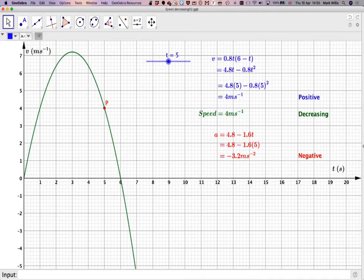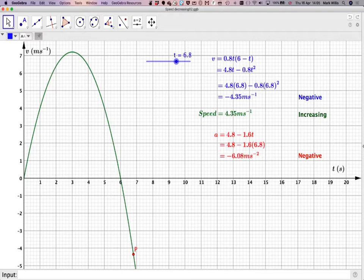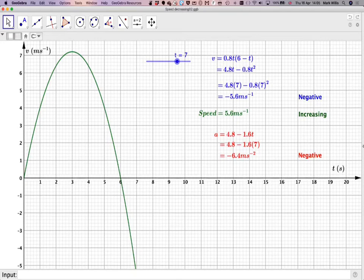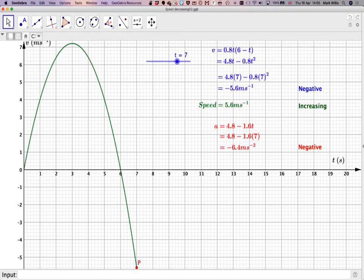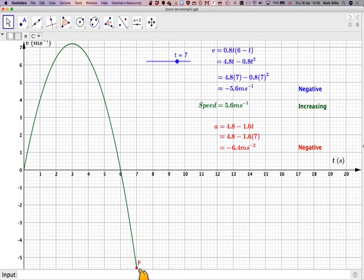And of course, the interesting thing is when we get to t equals 7, just slightly off the graph. Let's just move it up a bit so we can see it. We can see that the velocity is negative and the acceleration is negative, but the speed will actually be increasing. It's sort of here, it's changed direction, but now it's speeding away in the other direction.